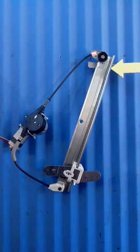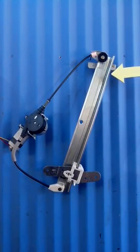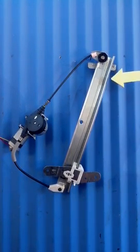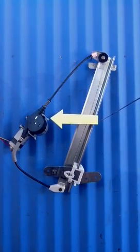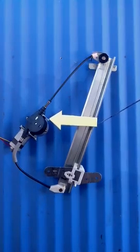The problem is the window regulator has gone bad or it's broken. This is a typical electric window regulator. It has a power motor that is an integral part of the regulator and it drives a cable.